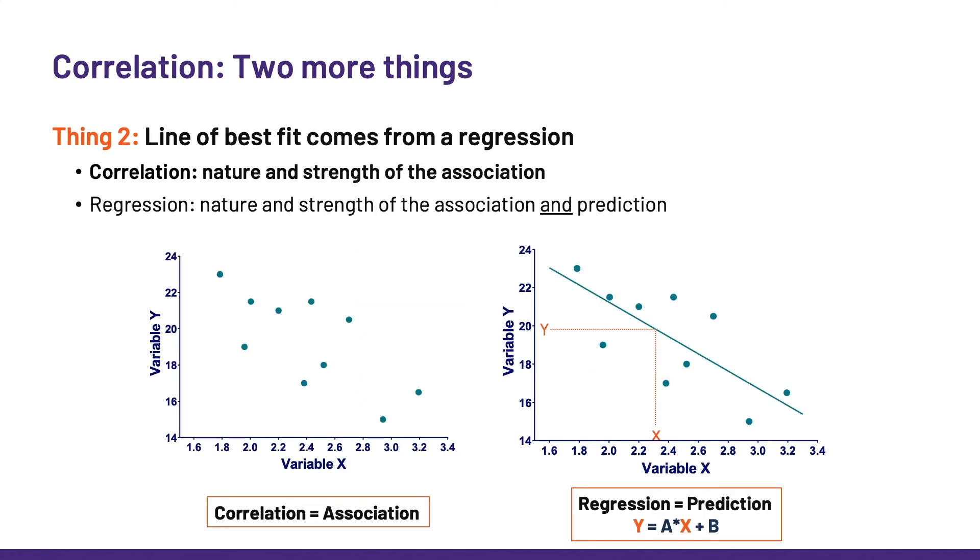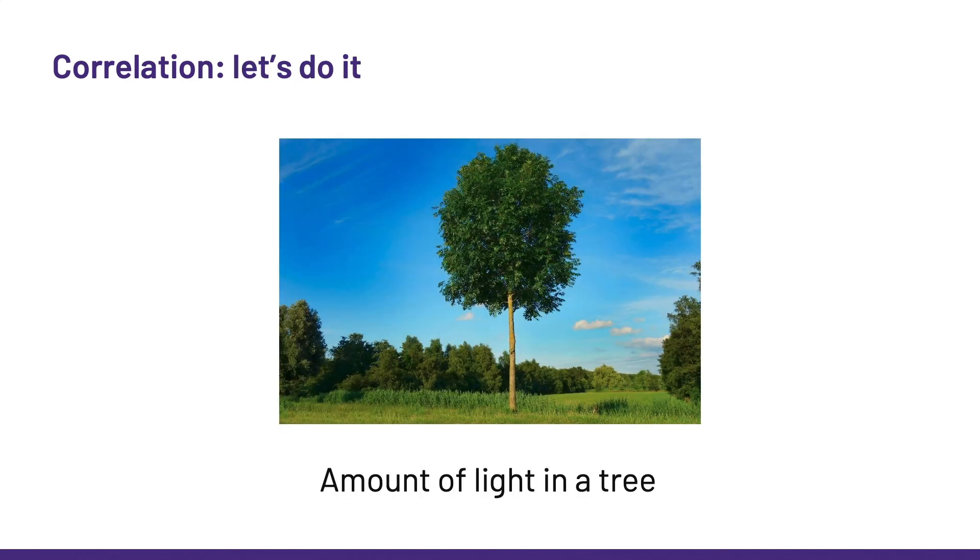And speaking of the line of best fit, it is not coming from correlation, but from a regression. A correlation is telling us about the nature and the strength of the association, whereas the regression is telling us about the nature and the strength too, but also about the prediction. It is telling us the extent to which x can predict y. A regression will give us the equation of the line of best fit.